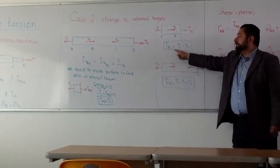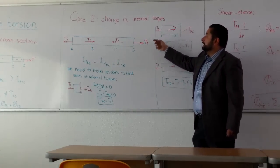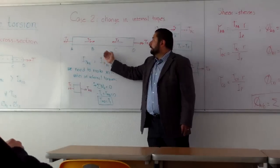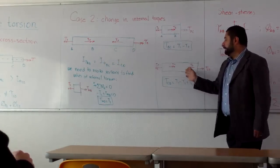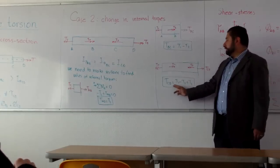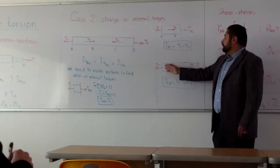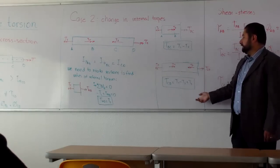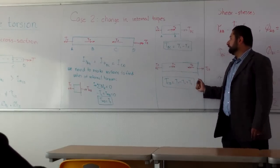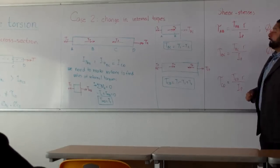We are going to use this internal torque when we calculate the internal shear stress in the bar and the deformation angle phi from B to C. And finally, the last section is CD. We see already three external torques and this is the value given by this equilibrium equation.